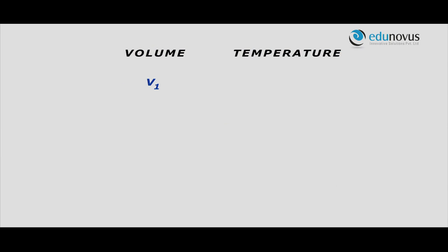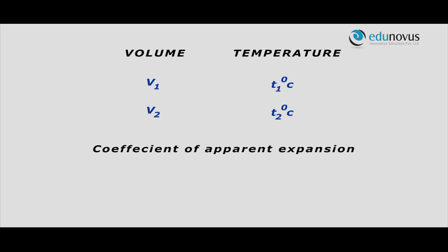If V1 and V2 are the volumes of a given mass of a liquid at T1 and T2 degree centigrade, the coefficient of apparent expansion is given by: gamma A = (V2 − V1) / (V1 × (T2 − T1)) per degree centigrade.